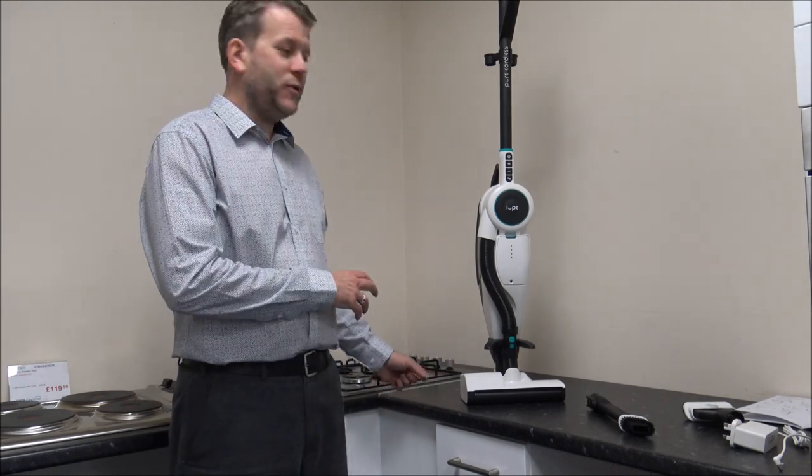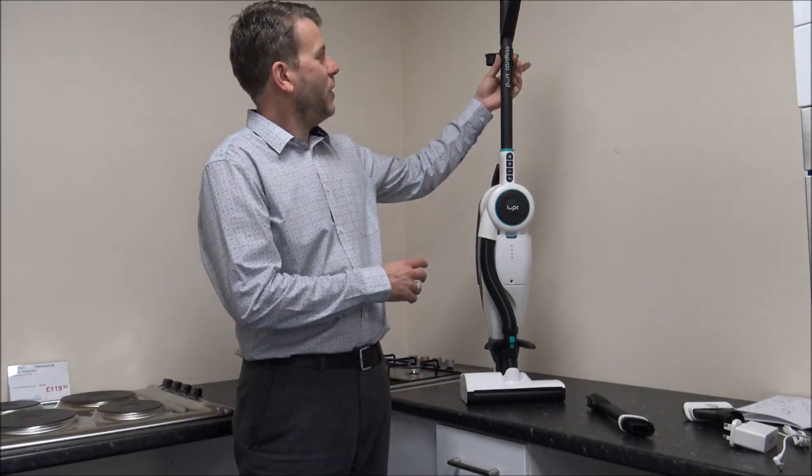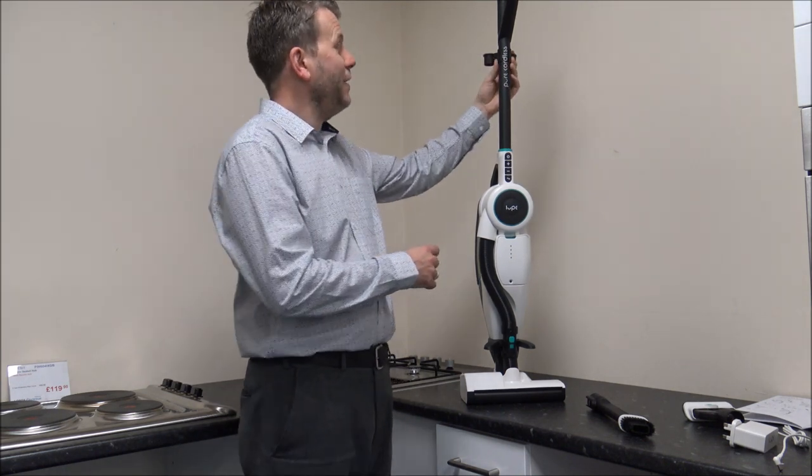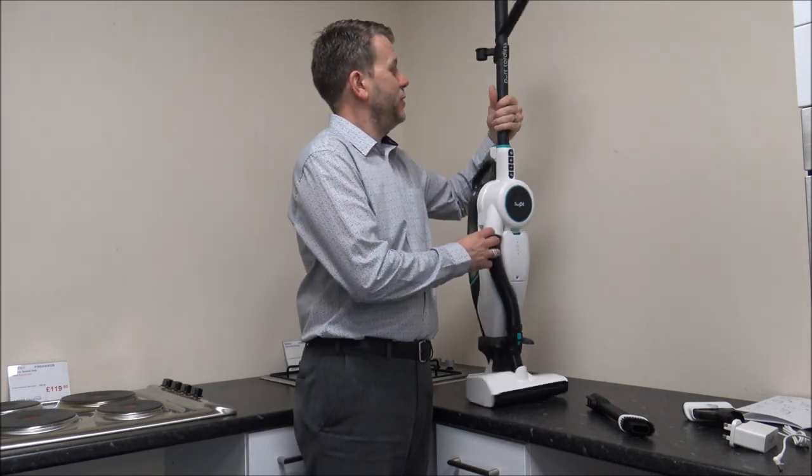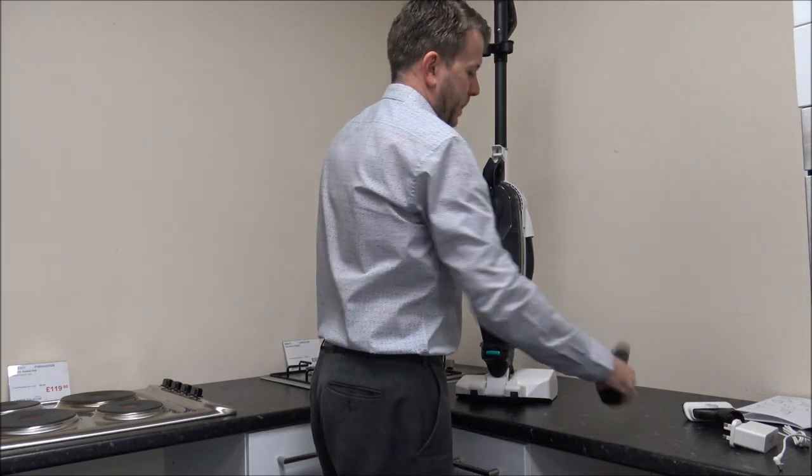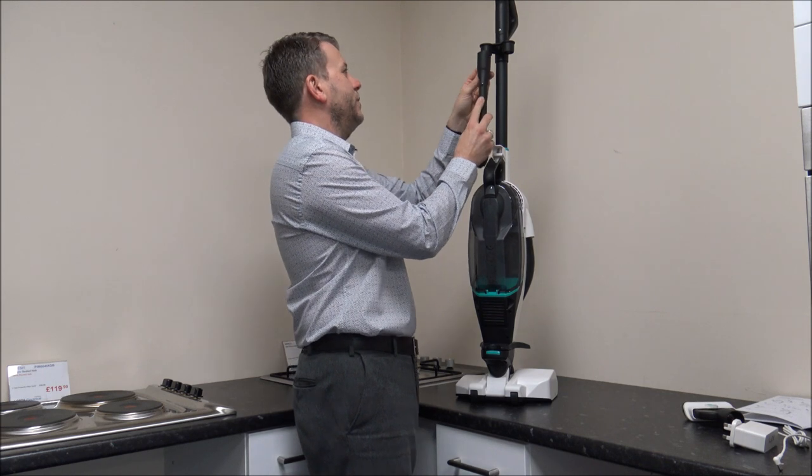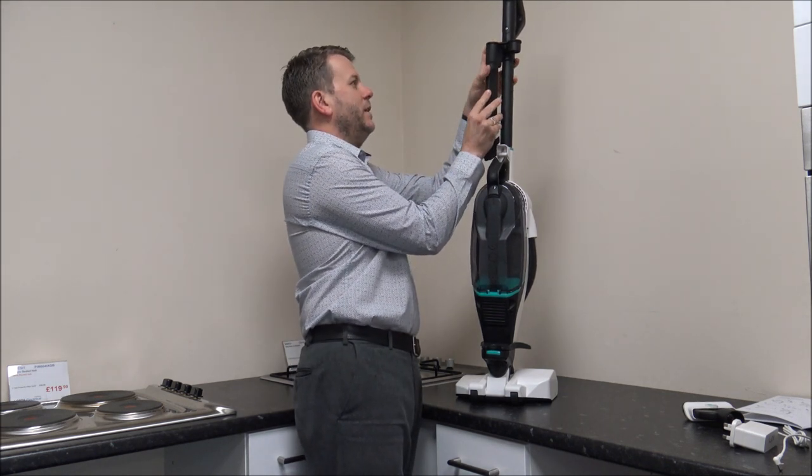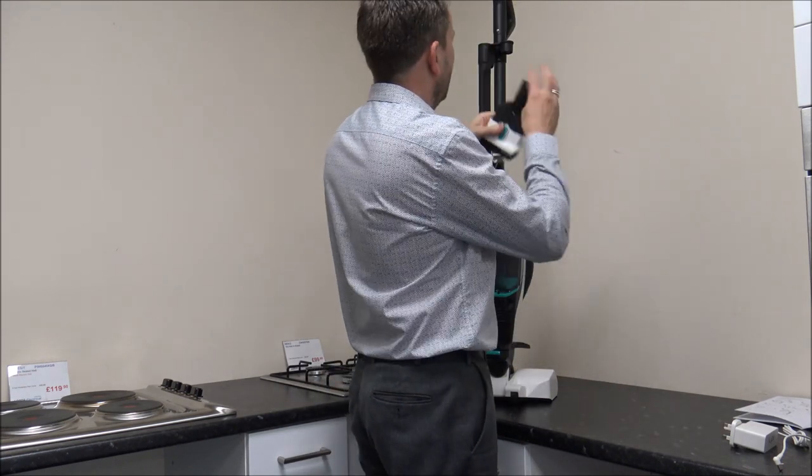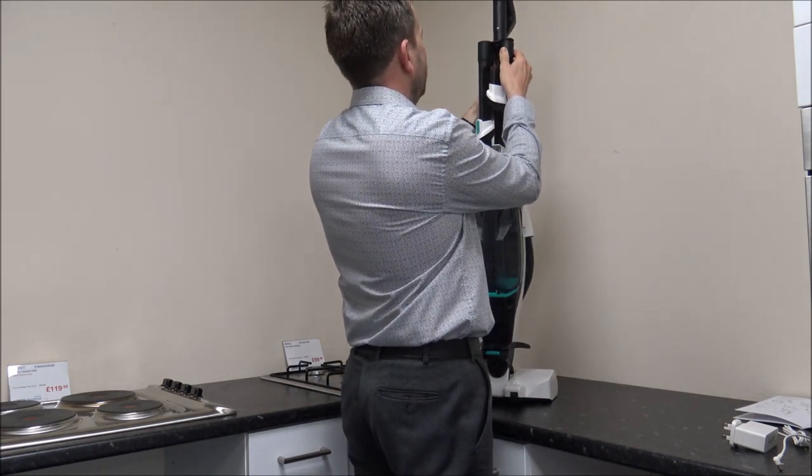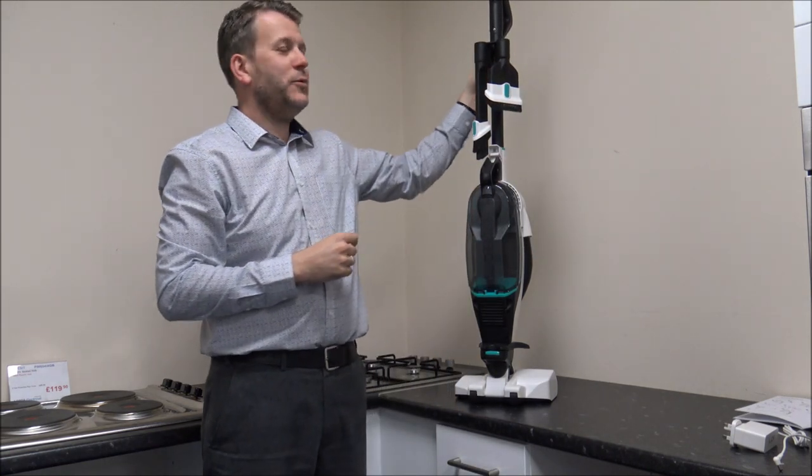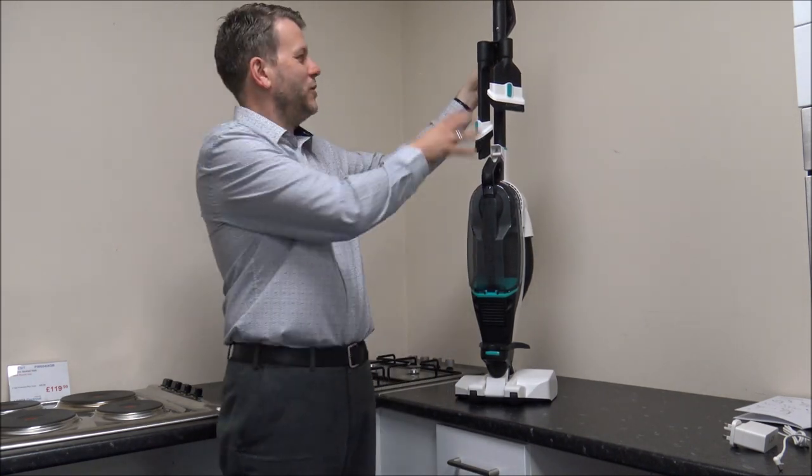So as I mentioned about the tool storage, it does also come with this. This is like a little tool caddy that you can put on. You don't have to. Some people might choose not to. But all it does is it just clips on at the top there. And then all you do is you just put the tools on there. It's just a good way to store the tools themselves. But I'm really glad they've done it as an option because there will be some people that don't want to store the tools on there.